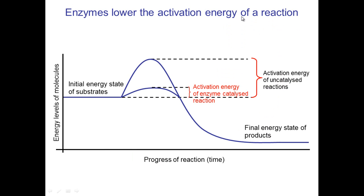This diagram shows us what enzymes actually do — they reduce the level of activation energy required for a reaction. What you have here is the energy level of the molecules. In order for an uncatalyzed reaction to take place, the activation energy required has to be quite high. What enzymes do is reduce the level of activation energy required for a reaction to take place, and therefore it can take place at much, much lower temperatures.